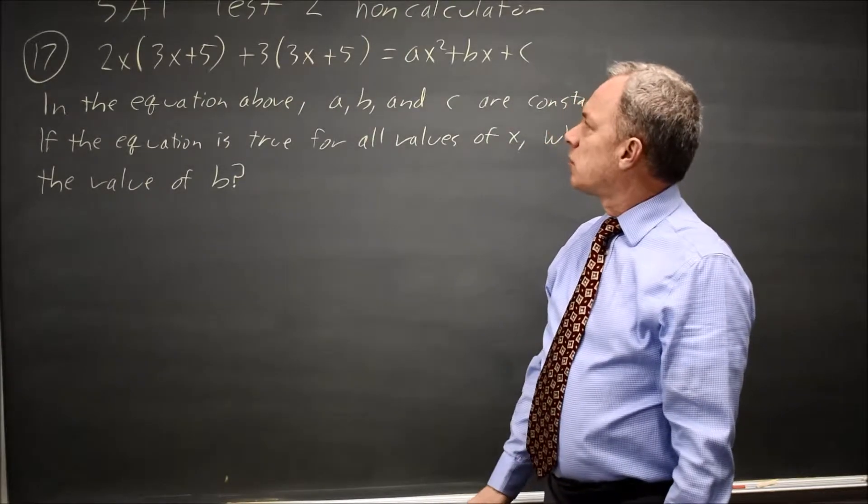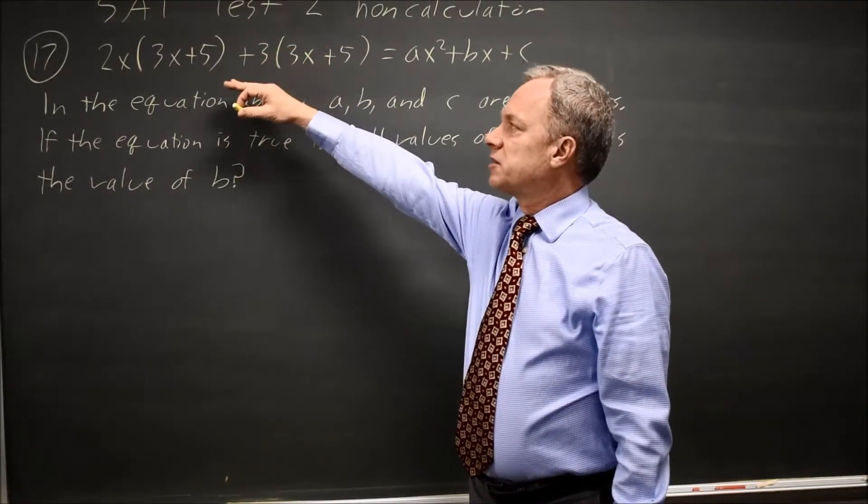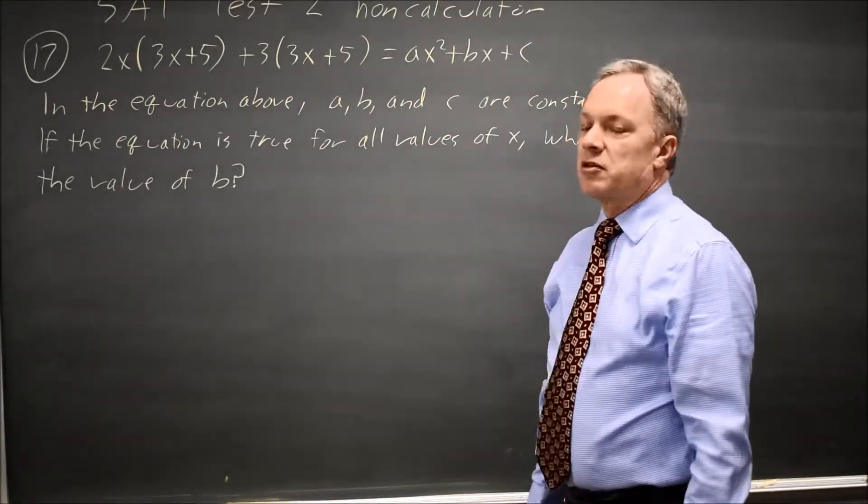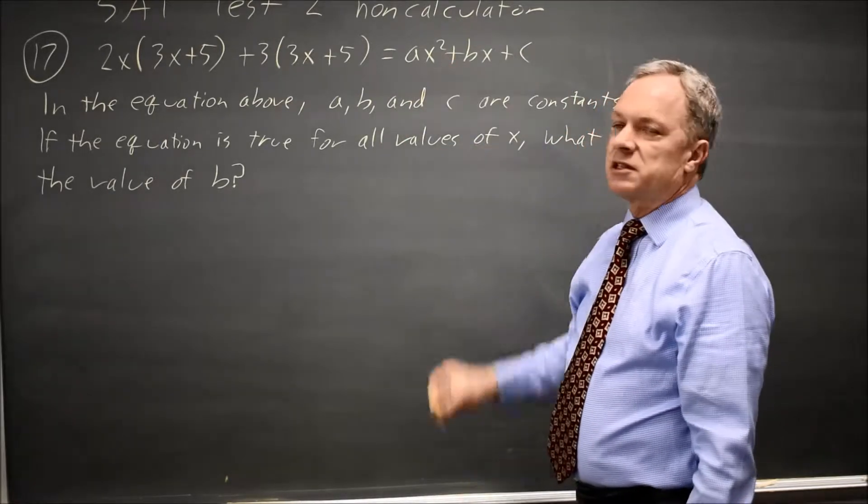College Board gives us a quadratic equation in two different forms, one of which we factored out a common factor, looks like factor by grouping, and the other is standard form, and they ask for the coefficient of x in standard form.